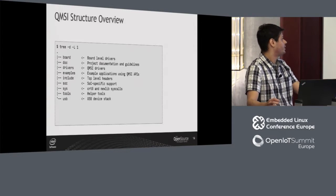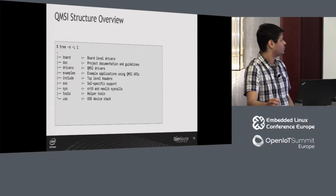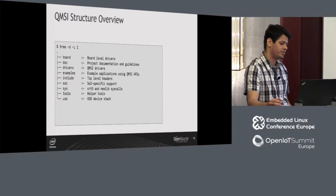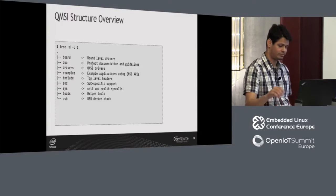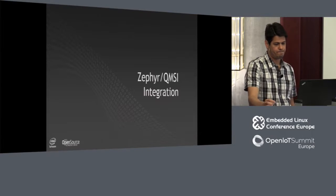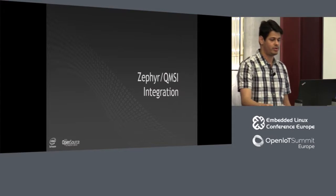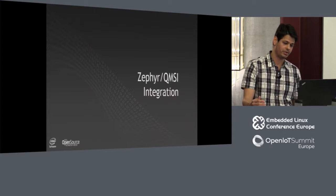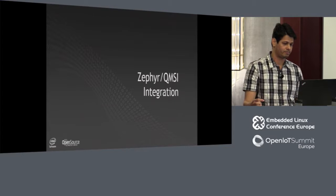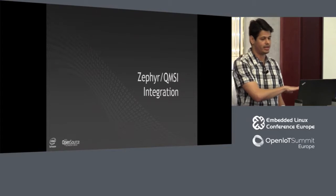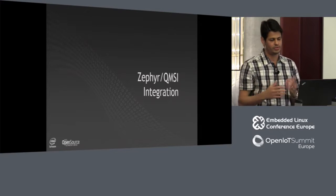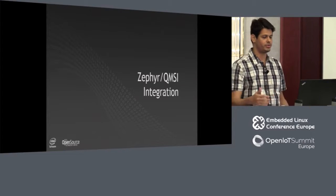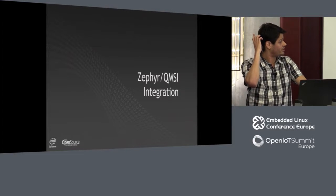The system directory contains the newlib syscalls and CRT0. Tools contains a few helper tools, and the USB directory provides a sample USB device stack. This is just a brief overview of QMSI — there's a dedicated talk about it this afternoon. This covers what I need to show about how we did the integration with Zephyr and Contiki.